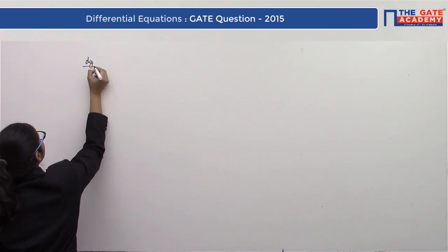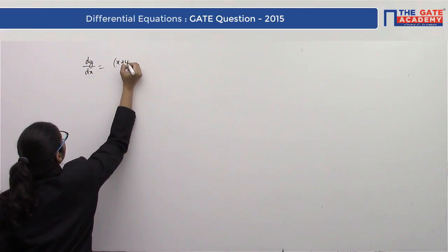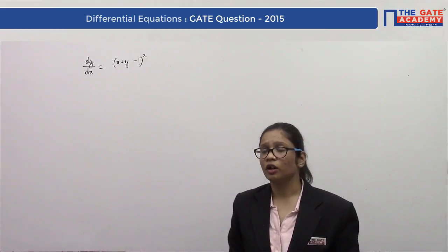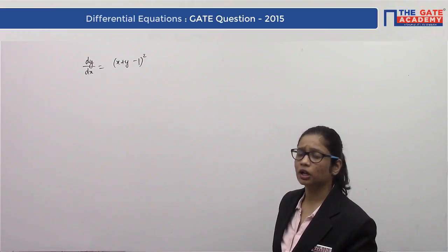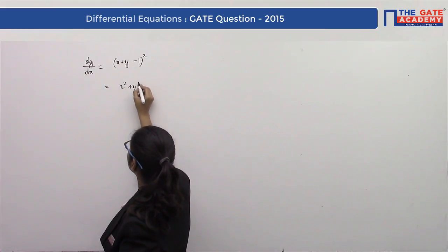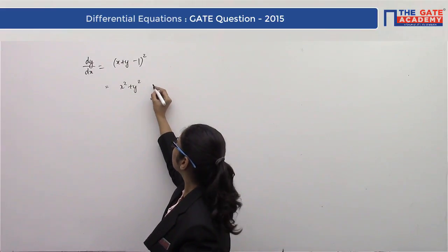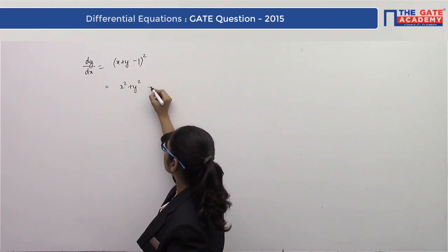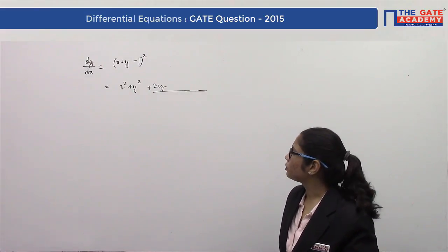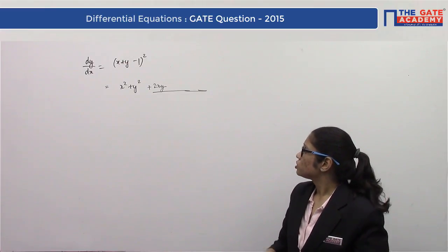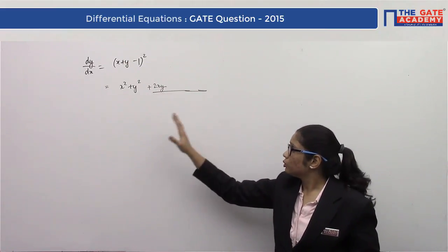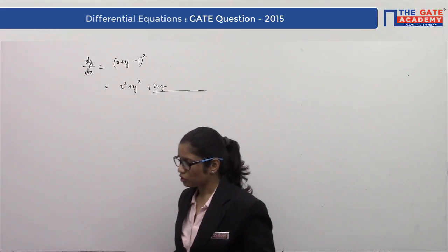You cannot solve this by the variable separable method because the variables are not separable. If you expand the brackets, you get terms like x², y², 2xy, and others, meaning x and y terms come together and cannot be separated. So this kind of question requires a different approach.